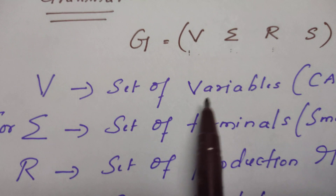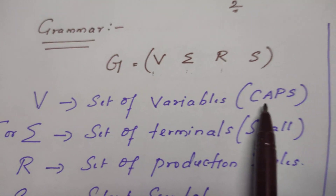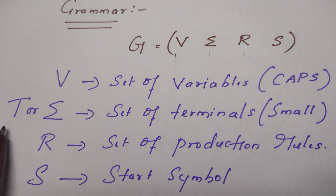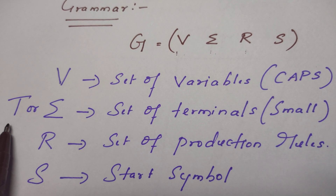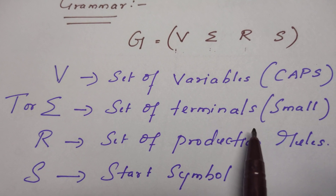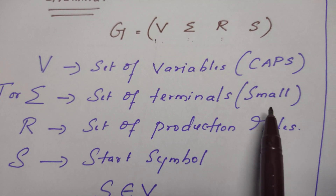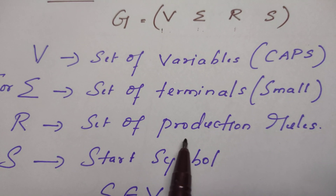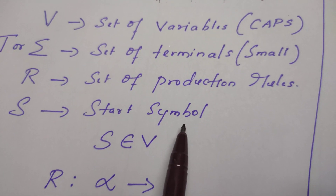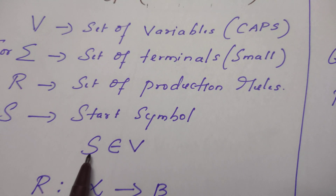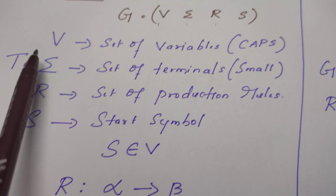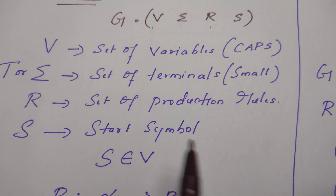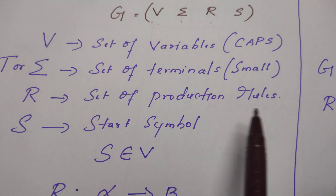What is V? V is the set of variables. When we write grammar rules, variables are always written using capital letters. Sigma — in some textbooks represented by the letter T — is the set of terminal symbols. Terminal symbols are normally written in small letters or lowercase. R is the set of production rules. S is the start symbol, and this S is a variable — S belongs to V. These four tuples are common for all the formal grammars, except the format of the production rule.